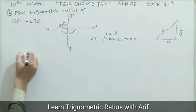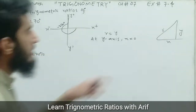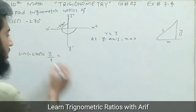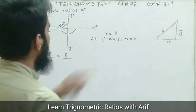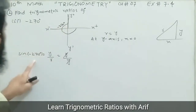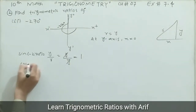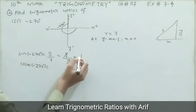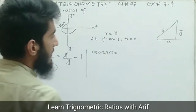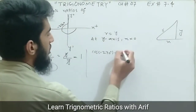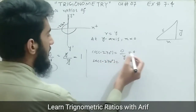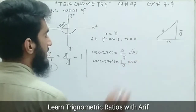Since the angle lies along the y-axis, the x-coordinate equals zero. Sine of negative 270 degrees equals y divided by r equals y divided by y, which gives one. Cosecant of negative 270 degrees is the reciprocal of sine, which also gives one. Cosine of negative 270 degrees equals base over hypotenuse equals x over r equals zero over y, giving zero. Secant is one over zero, which is undefined or does not exist.